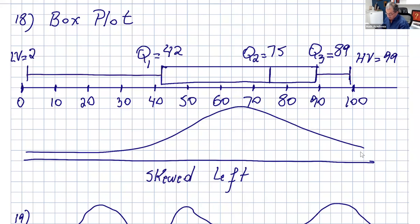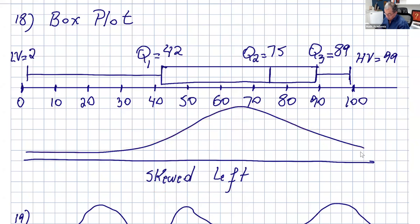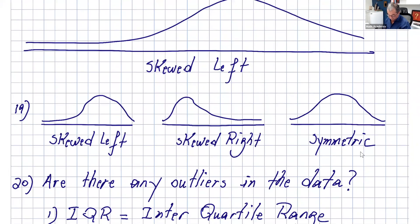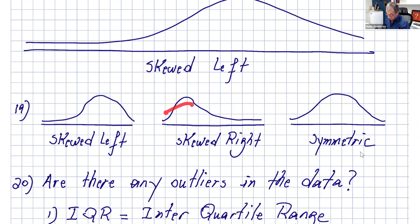Now let's analyze this. If I look at this box plot, most numbers are concentrated after 40. It is not a bad test. The concentration of numbers — we say this is skewed left. If the box plot were shifted right, that would be a very good test; if it were shifted left, that would not be a very good exam. If the concentration of numbers is to the right, you say it's skewed left. If the concentration of numbers is to the left, you say it's skewed right. And sometimes the concentration is right in the middle — it's symmetric.